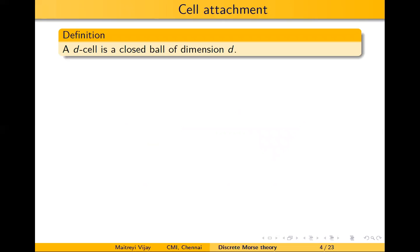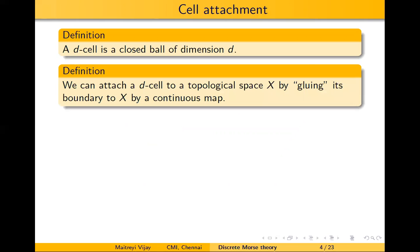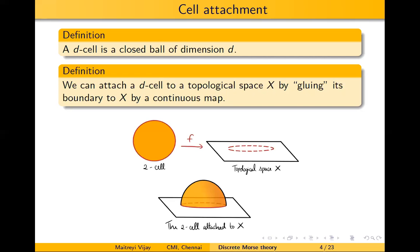A d-cell is just a closed ball of dimension d. We define cell attachment: if you have a topological space X and a d-cell, you take the boundary of the d-cell and glue it to the topological space using a continuous map. This is called attaching the d-cell to X. If you have a two-cell that's a disk and a topological space X, which is a plane, you have a map on the boundary of D2, which is S1, and you attach it with f. So it's a quotient space.